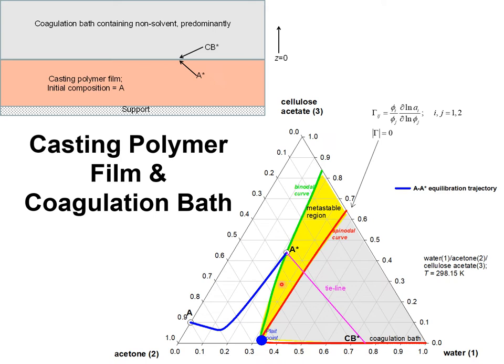Here is a phase diagram for water, acetone, and cellulose acetate. This point here shows the initial composition of the casting polymer film. The composition of the coagulation bath is this point here, which is pure water.